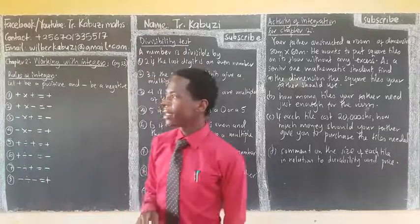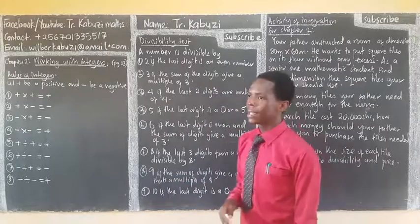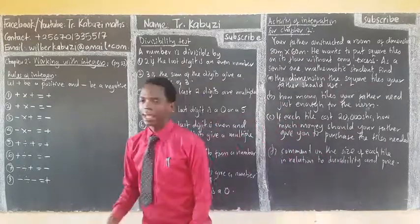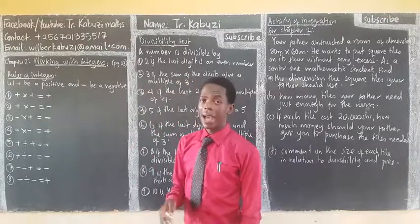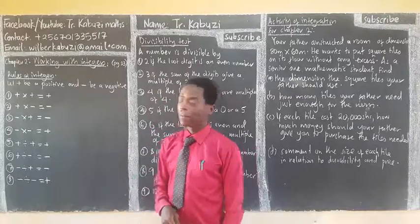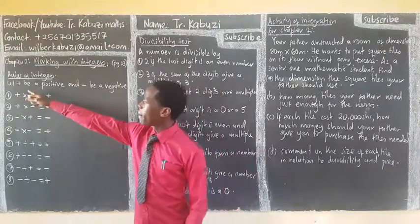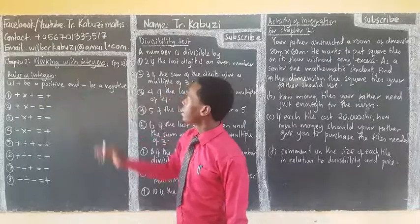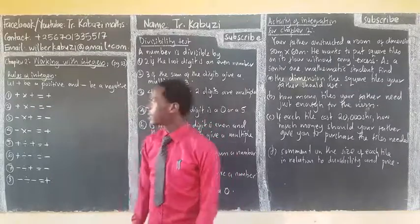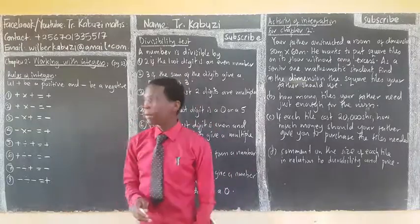Okay, now let us see the rules of integers. These are basics that we are going to use, so we are summarizing our topic today. Let plus be a positive and minus be a negative, so we are going to see what happens when you are dealing with the algebra of the signs.